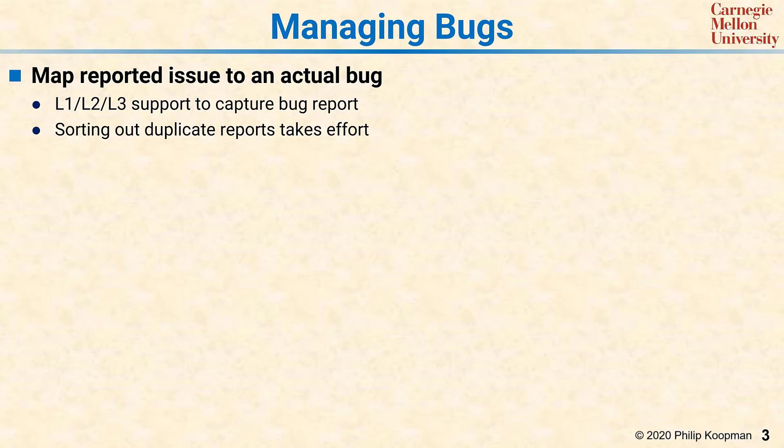Level 1 is the frontline support, which is generally script-driven and usually involves users not understanding something about the software or not having read the manual. It works up through Level 2 specialists to Level 3, which is typically engineering support. The idea is there's a screening and filtering function, so only things that are likely to be actual software bugs make it to Level 3 so that they can be fixed. Interpreting symptoms and pulling them down to root causes takes a lot of time, and there are often duplicate reports with different symptoms, so sorting that out is a considerable workload.